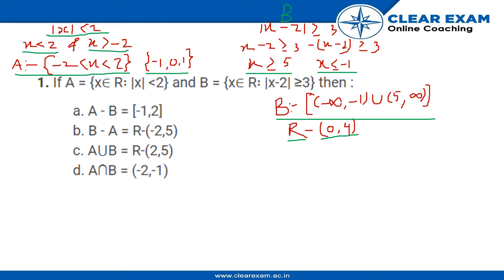Now let's calculate these. First, let's check for D: A intersection B. As you can see, in A there are minus 1, 0, and 1, and in B only minus 1 is present. The numbers from 0 to 5 are absent — 5 is present but the numbers from 0 to 4 are absent. So A intersection B is equal to minus 1, since that is the only element. Therefore, the range given to us is wrong, so D is wrong.